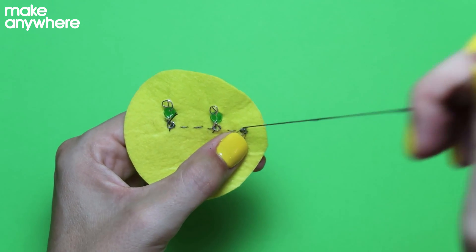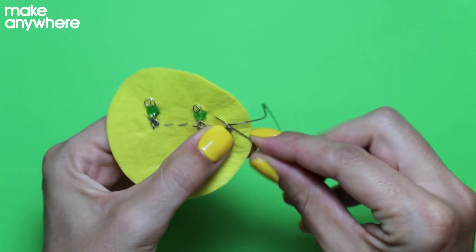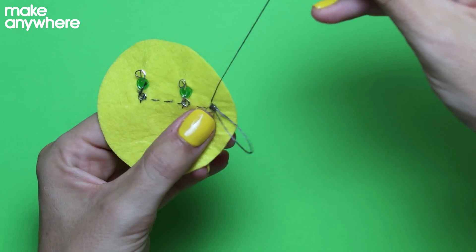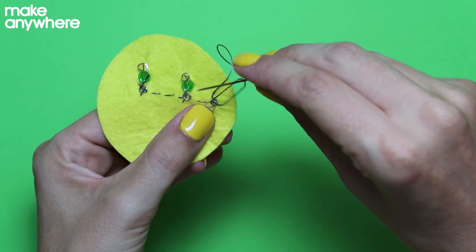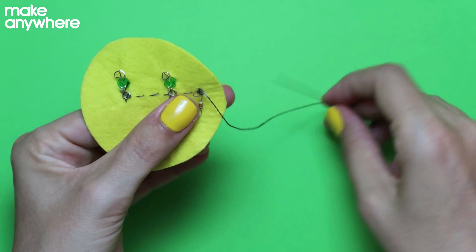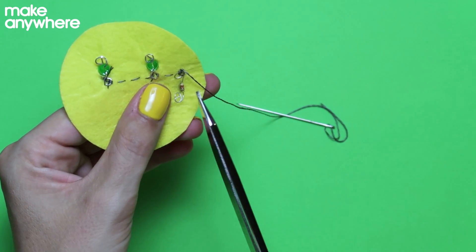Now we're done, we need to knot this off. So go under an old stitch, stitch around and then through the loop and pull up. Nice and tight till you have a knot. Then cut.